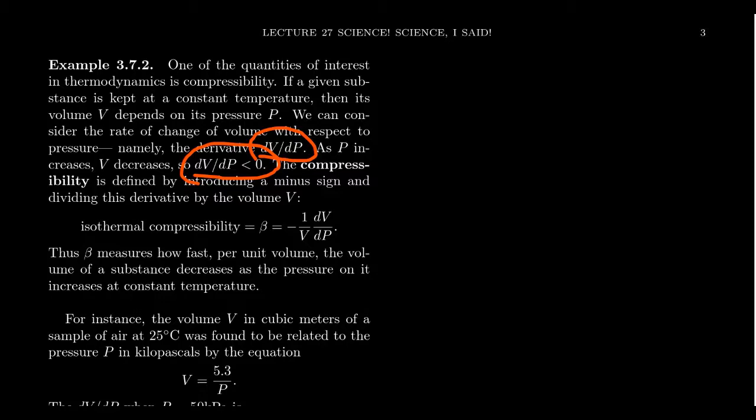So the compressibility is going to be defined with an extra minus sign in it. We know the derivative is going to be negative. So the compressibility quantity we're going to come up with, we want it to be positive. So we're going to slap a negative sign in front of it. So isothermal compressibility, which is commonly denoted by the Greek letter beta, this is the quantity negative one over the volume times the derivative of volume with respect to pressure.